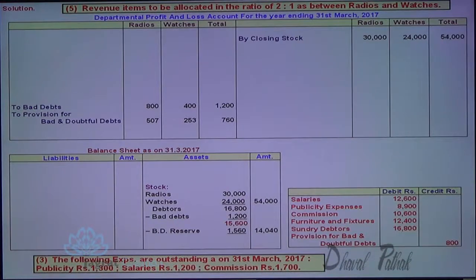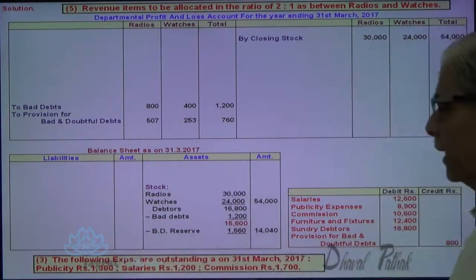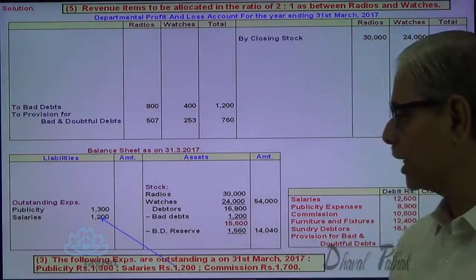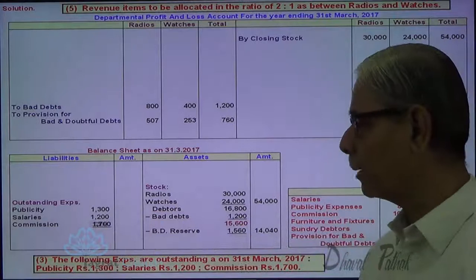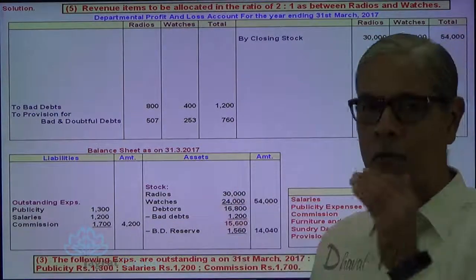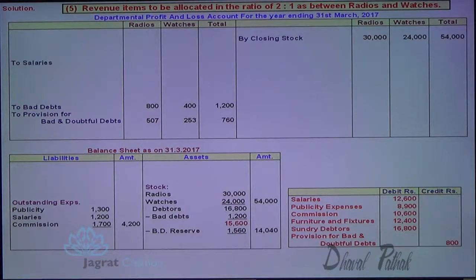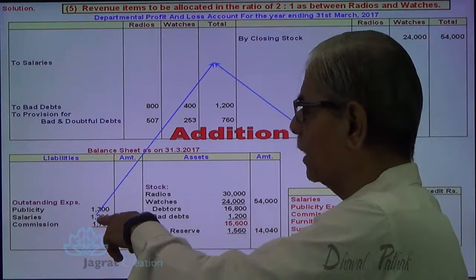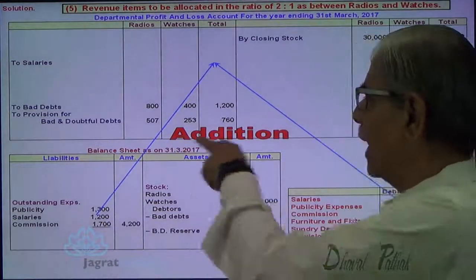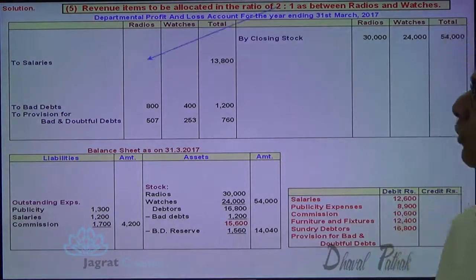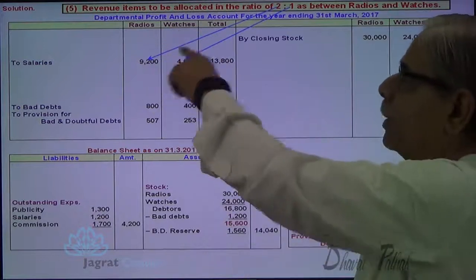Now, following outstanding expenses on 31st of March: publicity is 1,300. Outstanding expense of 1,300 for publicity will appear on the balance sheet liability side. Salaries outstanding and commission outstanding will also appear on the balance sheet liability side. These outstanding expenses will be added to the expenses paid as given in the trial balance. Salaries: 12,600 plus outstanding 1,200 equals 13,800. This 13,800 will be bifurcated in the ratio of 2 to 1, so two-thirds and one-third will be debited to the radio and watches accounts respectively.